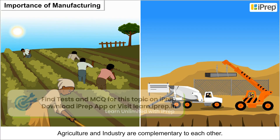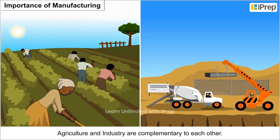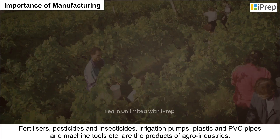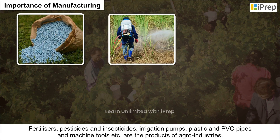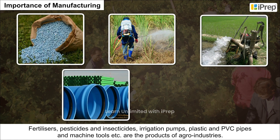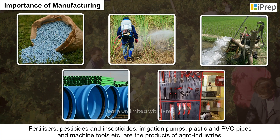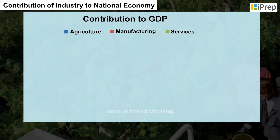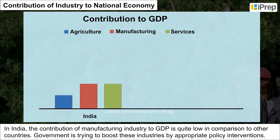Agriculture and industry are complementary to each other. Fertilizers, pesticides, insecticides, irrigation pumps, plastic and PVC pipes, and machine tools are among the products of agro-industries.